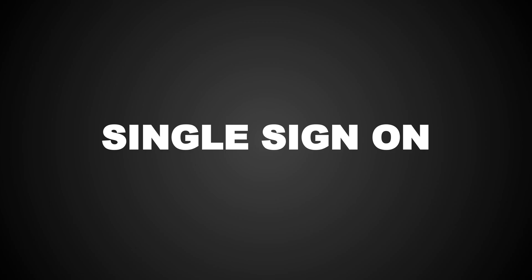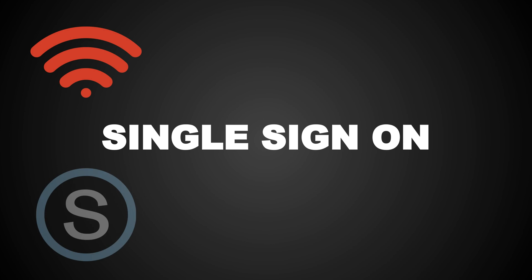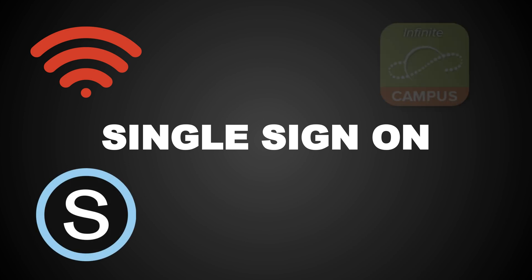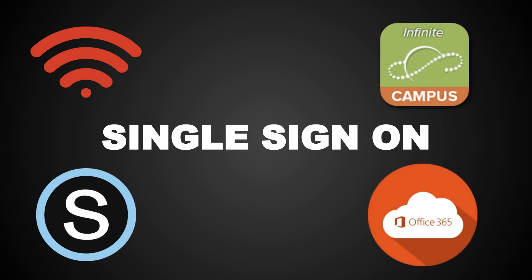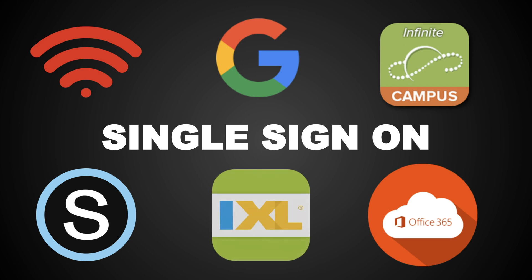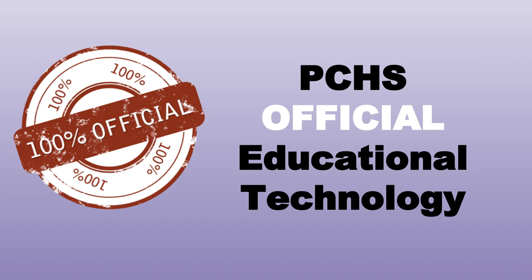Single sign-on means that your Palisades Charter High School account, which is your Microsoft account, gets you into all your accounts: your Wi-Fi, your Schoology account, your Infinite Campus account, Office 365, Google account, and your IXL account.